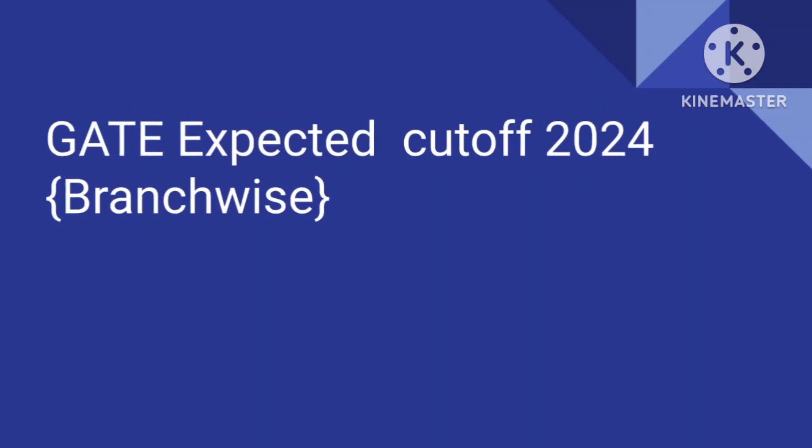For electrical engineering, the expected cutoff for general category is around 30.2, for OBC the cutoff is around 28, and for SC and ST category the cutoff is around 22.5. Now talking about the next branch.